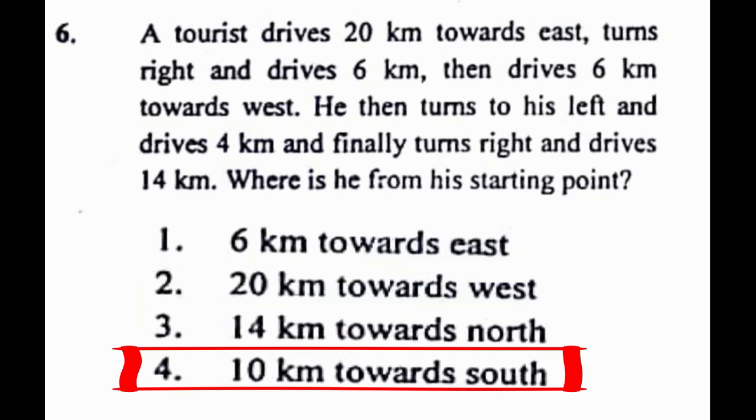Here is the next problem, problem number 6: A tourist drives 20 km towards east, turns right and drives 6 km, then drives 6 km towards west. He then turns to his left and drives 4 km and finally turns right and drives 14 km. Where is he from his starting point? The correct answer to this problem is option 4, that is 10 km towards south.